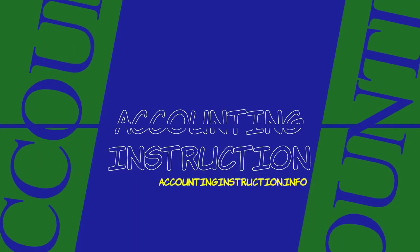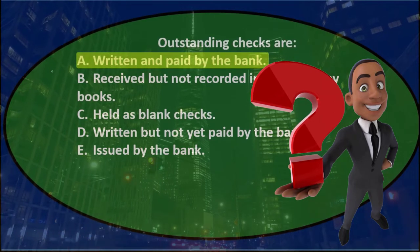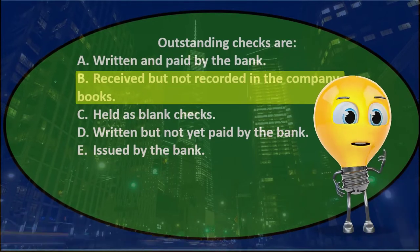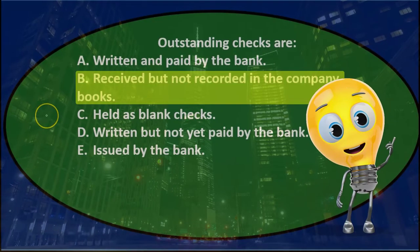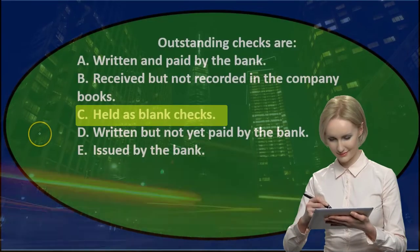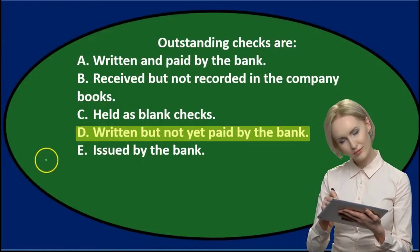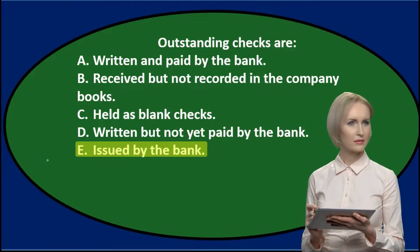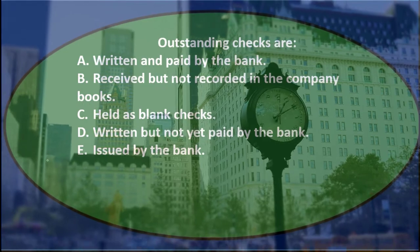First question: outstanding checks are — A) written and paid by the bank; B) received but not recorded in the company books; C) held as blank checks; D) written but not yet paid by the bank; E) issued by the bank. We will read through these and cross them out using the process of elimination.